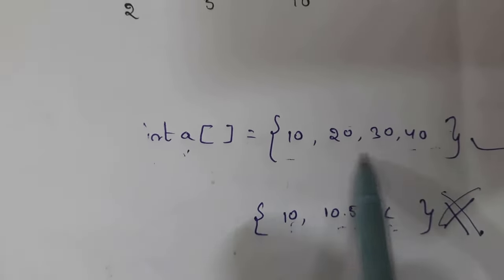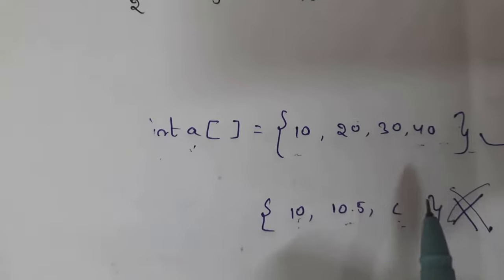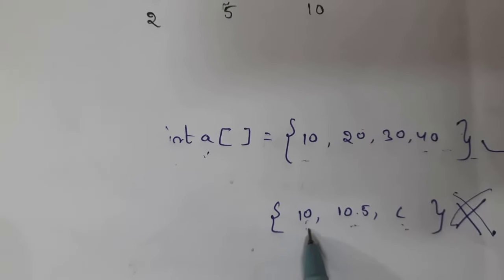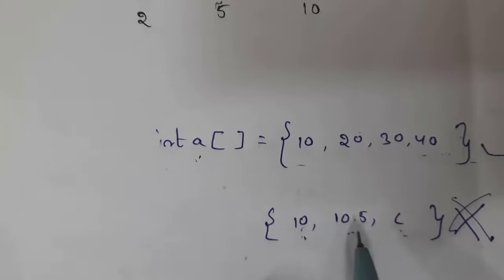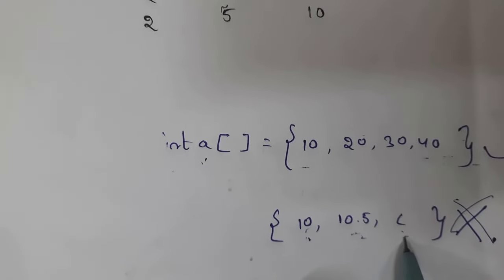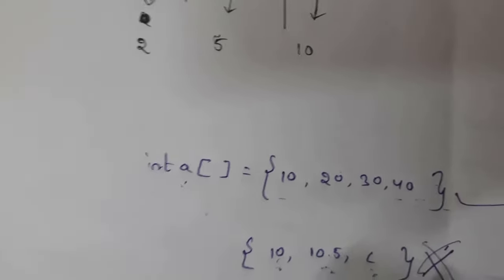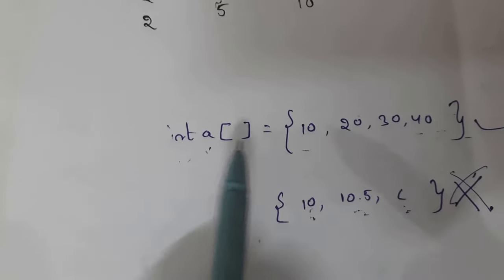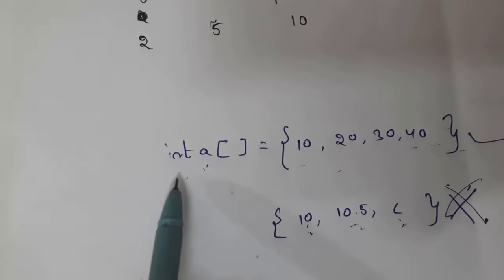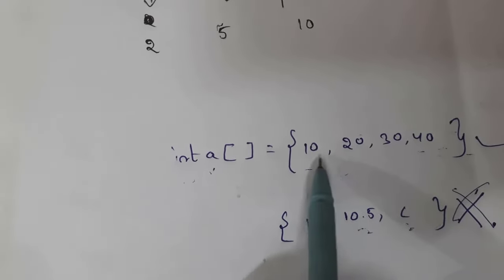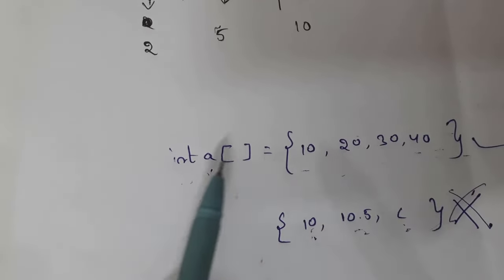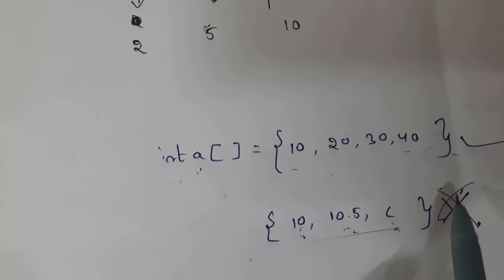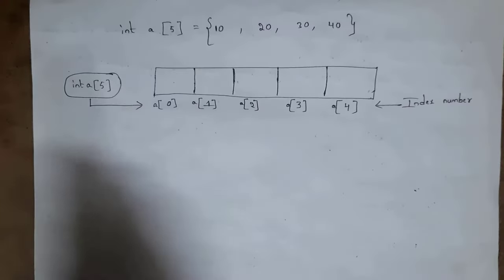An array must contain only similar type of elements. For example, if I declared int, I need to declare only integer elements. An array should not contain mixed type of elements — for example, one integer, one float, and one character is not allowed; it will display an error. If I declare float, I take only float elements; if I declare char, only character elements.